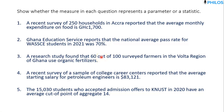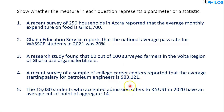Question four: a recent survey of a sample of college career centers reported that the average starting salary for petroleum engineers is $83,121. The question itself tells you it's a sample — not the entire group of petroleum engineers, just a subset of them. So this average of $83,121 is a statistic.